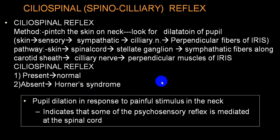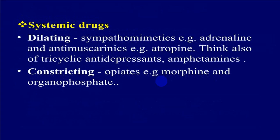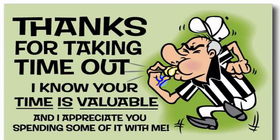Regarding the ciliospinal reflex: when you stimulate the skin in the neck by pinching and get dilation of the pupil on the same side, the ciliospinal reflex is present. If it is absent, it means sympathetic damage — one part of the clinical picture in Horner's syndrome. Thank you all for taking the time. I know your time is valuable and this is a very long topic. See you in the next lecture. If you like this lecture, please press Like, Subscribe, and share with your friends.